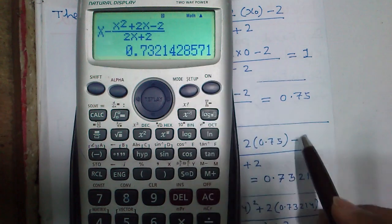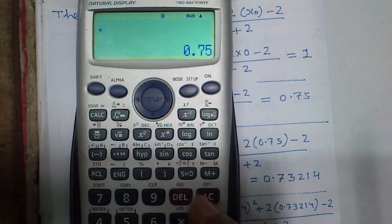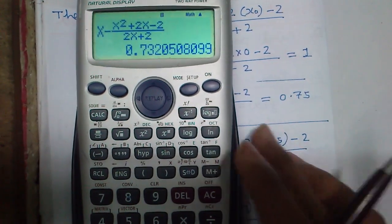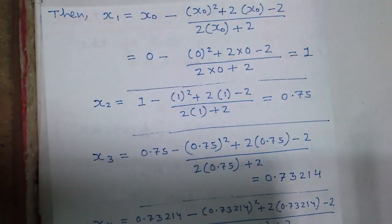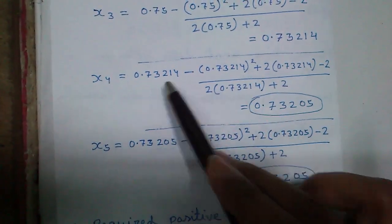0.73214. Again. Now the question is how far we will calculate. We will continue calculation until we get last two terms equal.